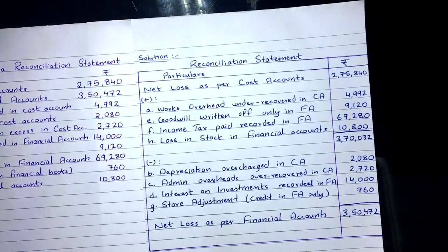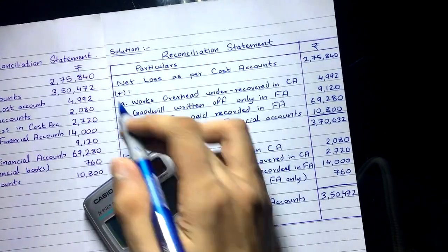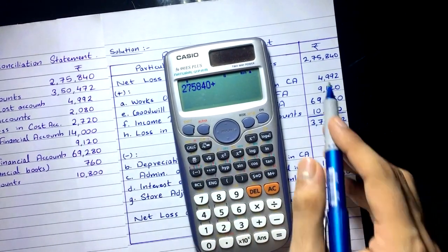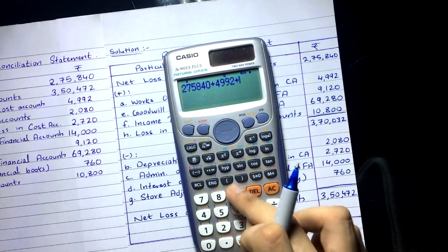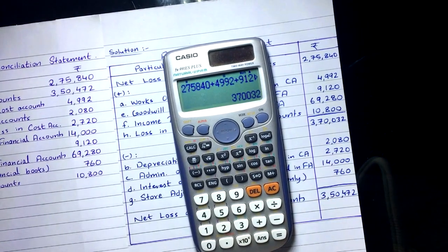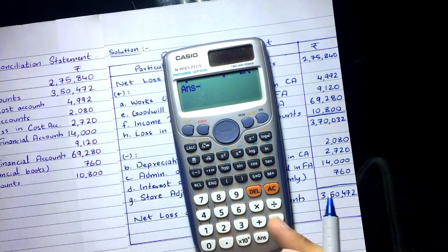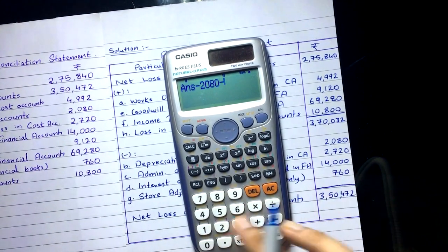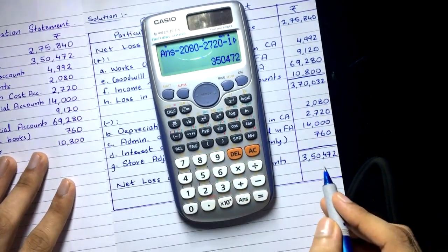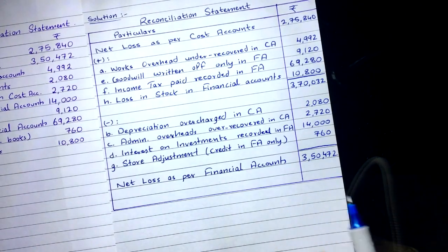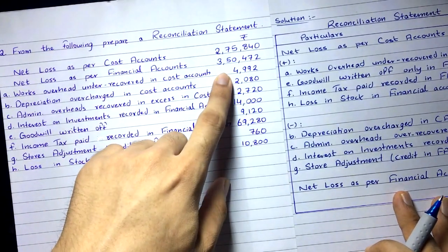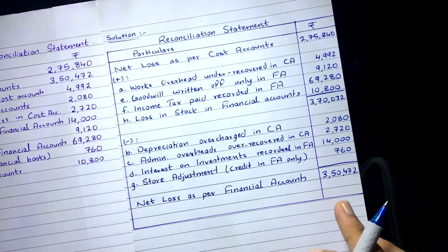Now let's calculate. Start with net loss as per cost accounts: 2,75,840. Add the transactions to be added: plus 4,992, plus 9,120, plus 69,280, plus 10,800 — giving 3,70,032. Then deduct: minus 2,080, minus 2,720, minus 14,000, minus 760 — giving 3,50,472. This matches the net loss as per financial accounts given in the question, so the answer is correct.